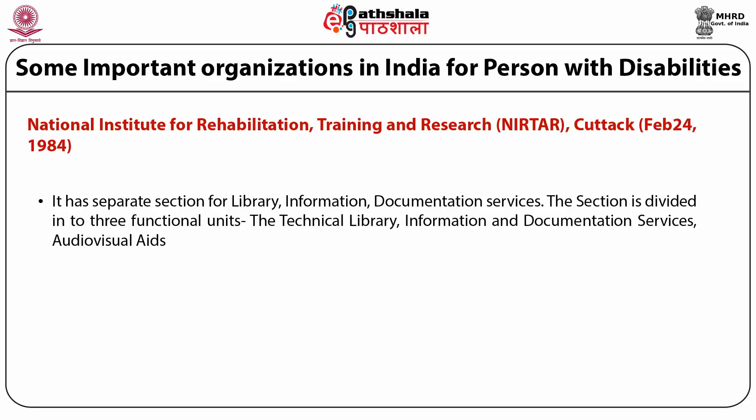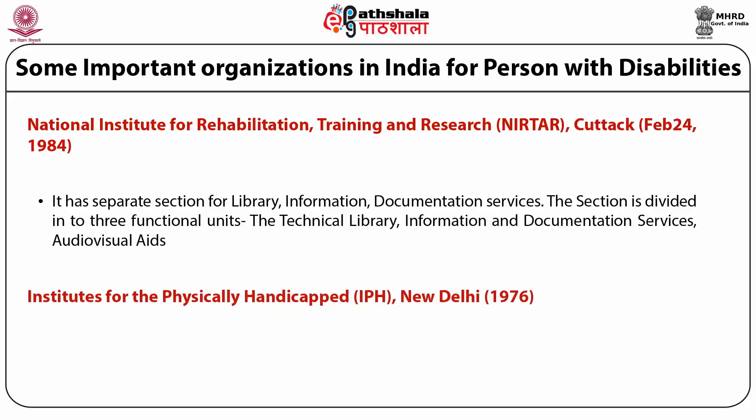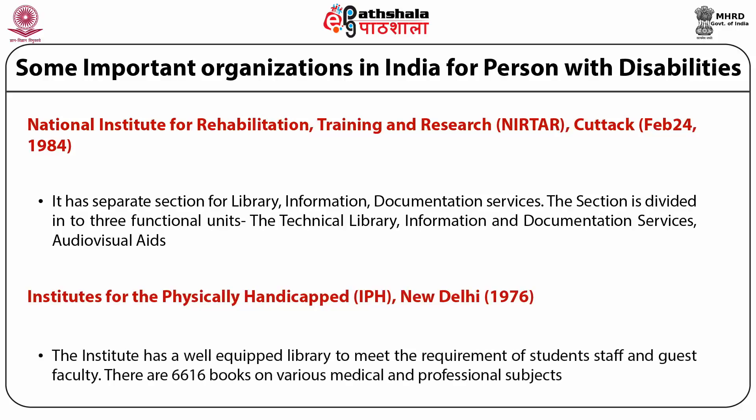Next is the National Institute for Rehabilitation Training and Research, which has a separate section for library, information and documentation services divided into three functional units: the technical library, information and documentation services, and audiovisual aids. Next is the Institutes for the Physically Handicapped New Delhi, which has a well-equipped library to meet the requirements of students, staff and guest faculty, with 6,616 books on various medical and professional subjects.